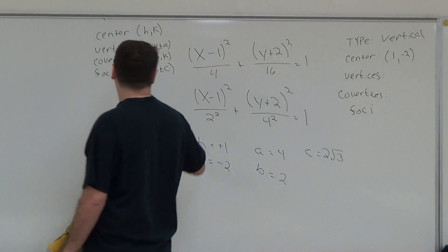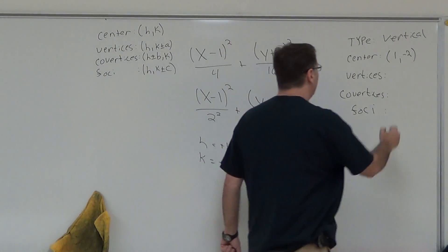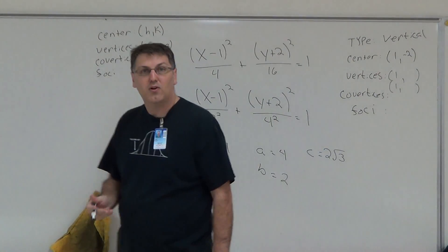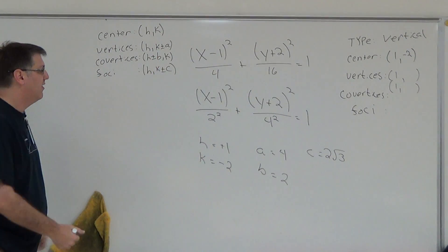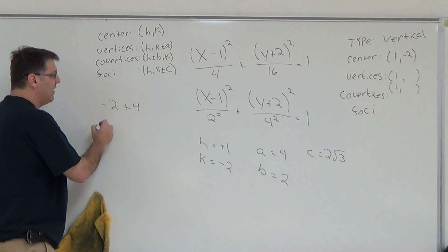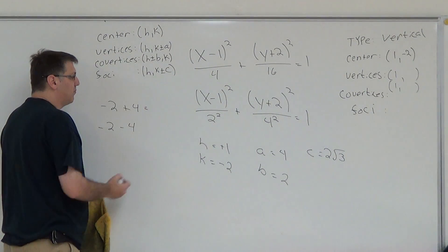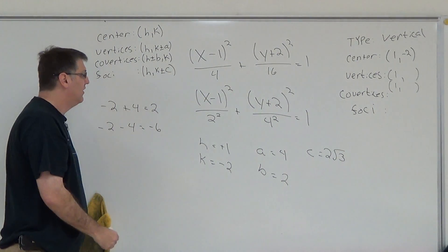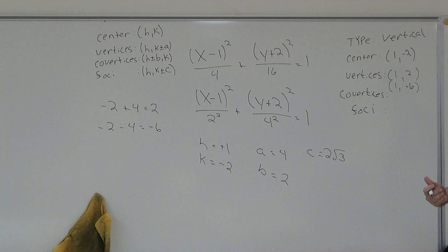Your vertices is a formula. There's going to be two of them because you have a plus or minus, but it's H, so that doesn't change. Your H is 1, comma some number, and then 1, comma some number. We have to find that number. The way we find that number is we're going to do K plus A and K minus A. My K is negative 2 plus my A, which is 4, and negative 2 minus 4. Basic arithmetic at this point. Negative 2 plus 4 is just positive 2, and negative 2 minus 4 is nothing more than negative 6. So you bring these numbers here. Therefore, your vertices of this ellipse are 1, 2 and 1, negative 6.